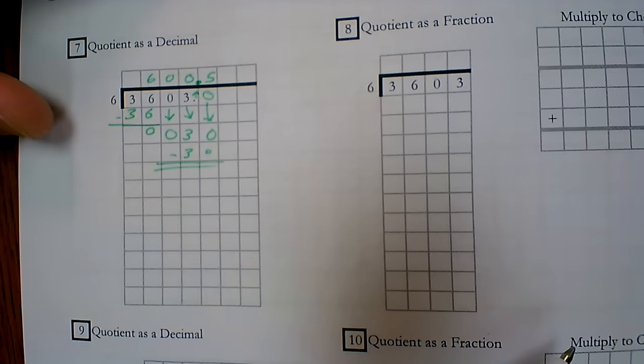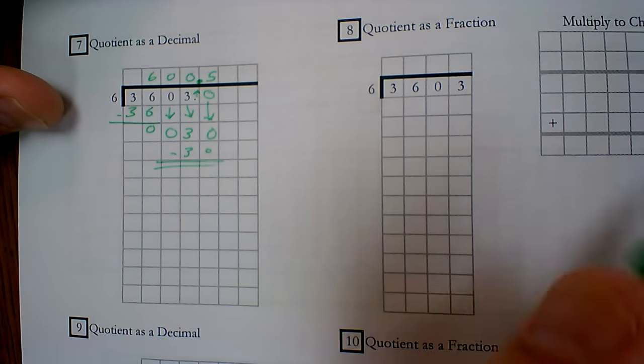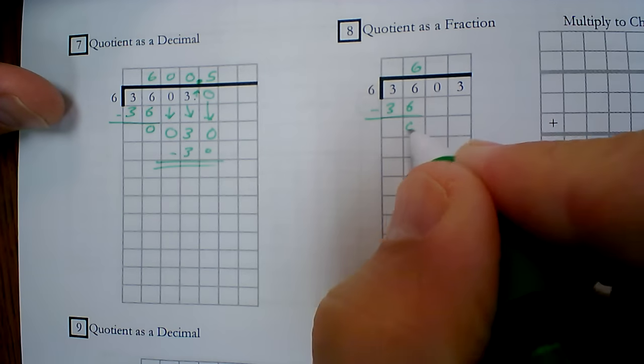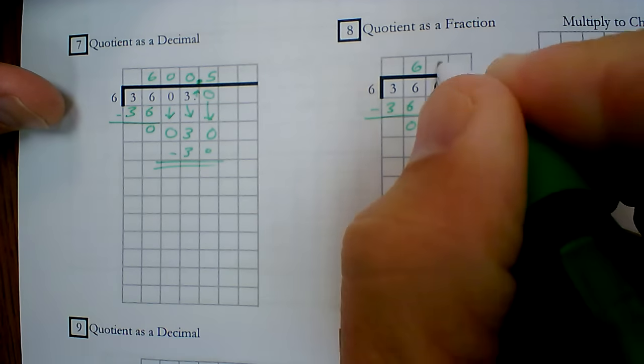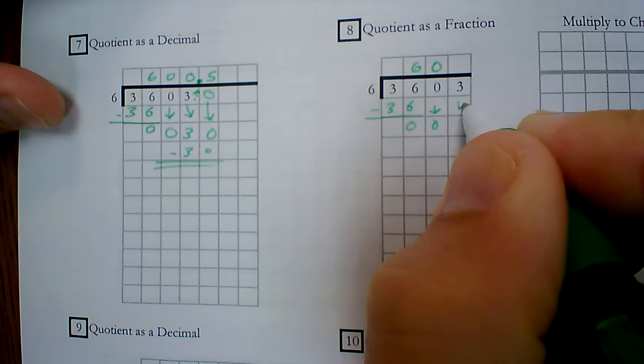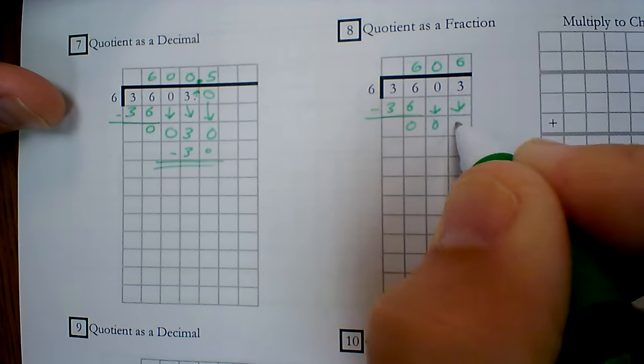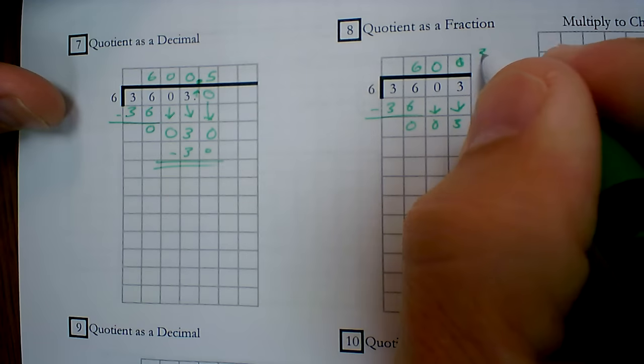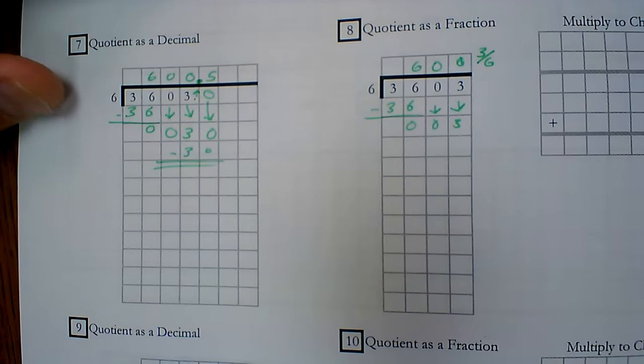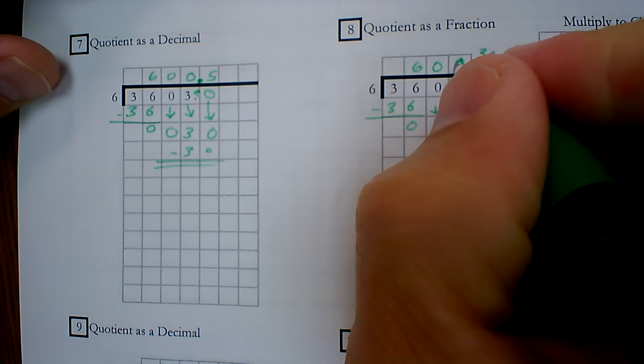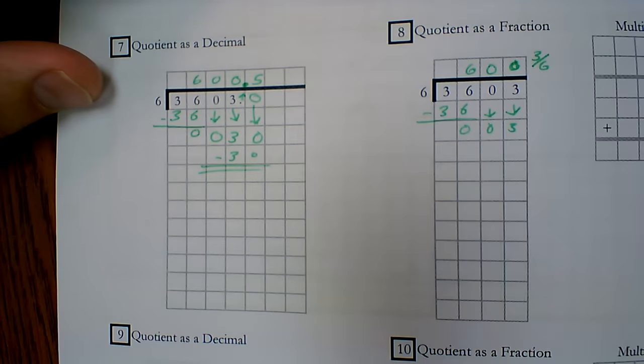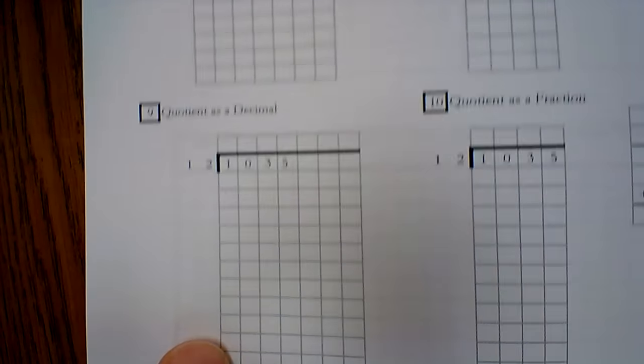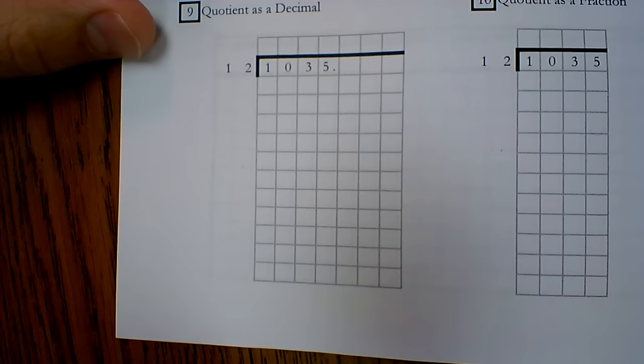Now over here it says quotient as a fraction. So the process is the same. I'm going to subtract. I'm going to bring down. I'm going to bring down. So I've got three left over. So I just make that a fraction. So 600, three six, or 600 and five tenths. Exact same number.